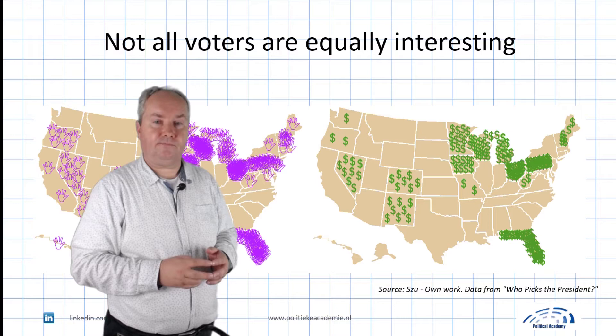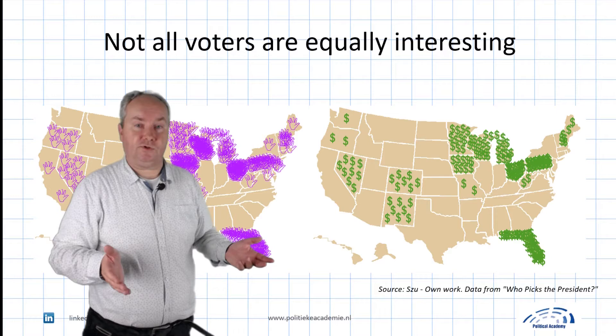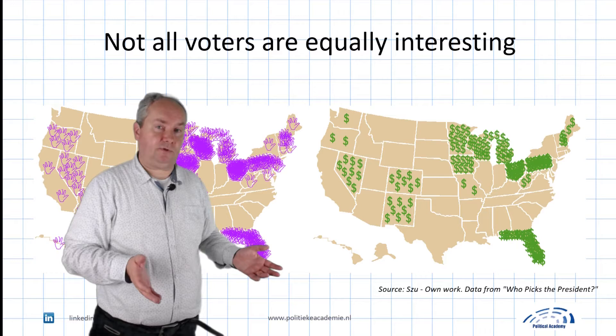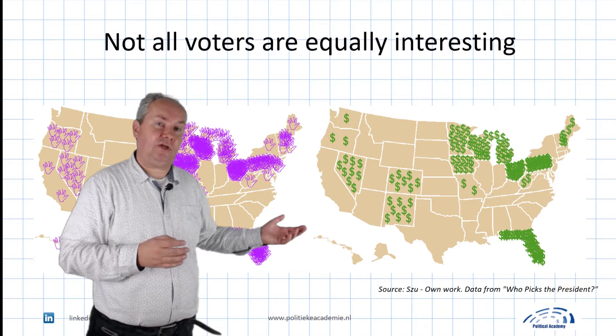Data for the Bush-Kerry campaign of 2004 clearly show the candidates concentrate on so-called swing states. Each waving hand in the left-hand graphic represents a visit from a candidate during the final five weeks of the election. The right-hand map shows how much money was spent on TV advertising — each dollar sign represents one million dollars in the same last five weeks. You can imagine that these states had the ear of the candidate; promises were made. It also means that campaign plans focus less on good arguments, convincing voters, and credible policy proposals, and more on just getting to plurality in as many states as possible.